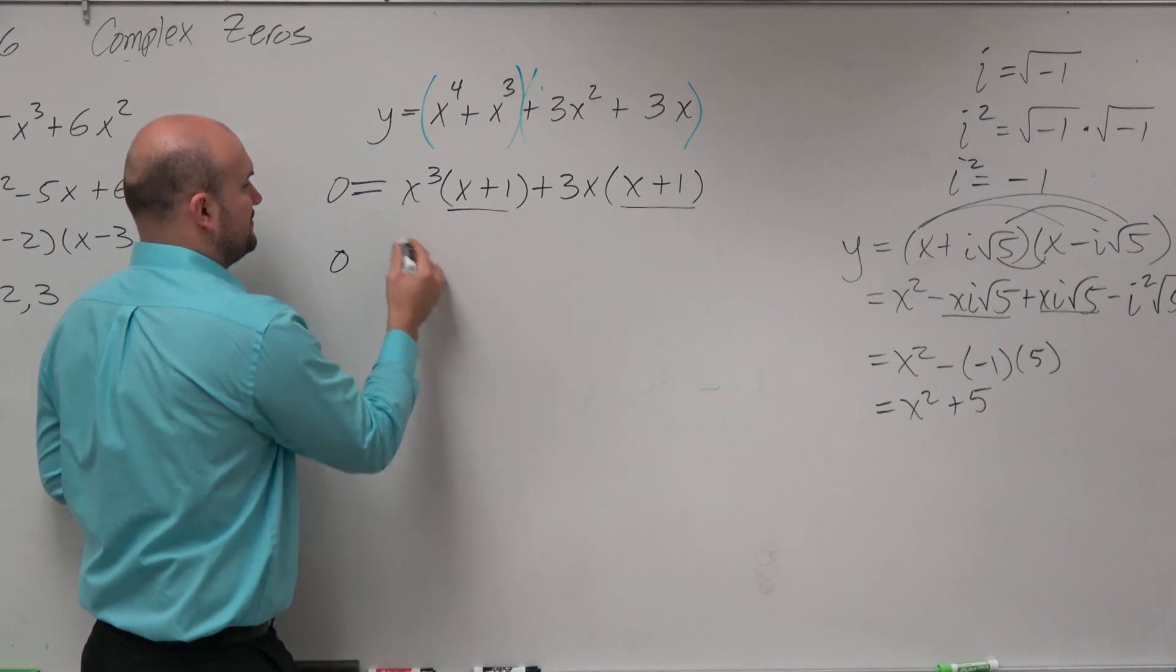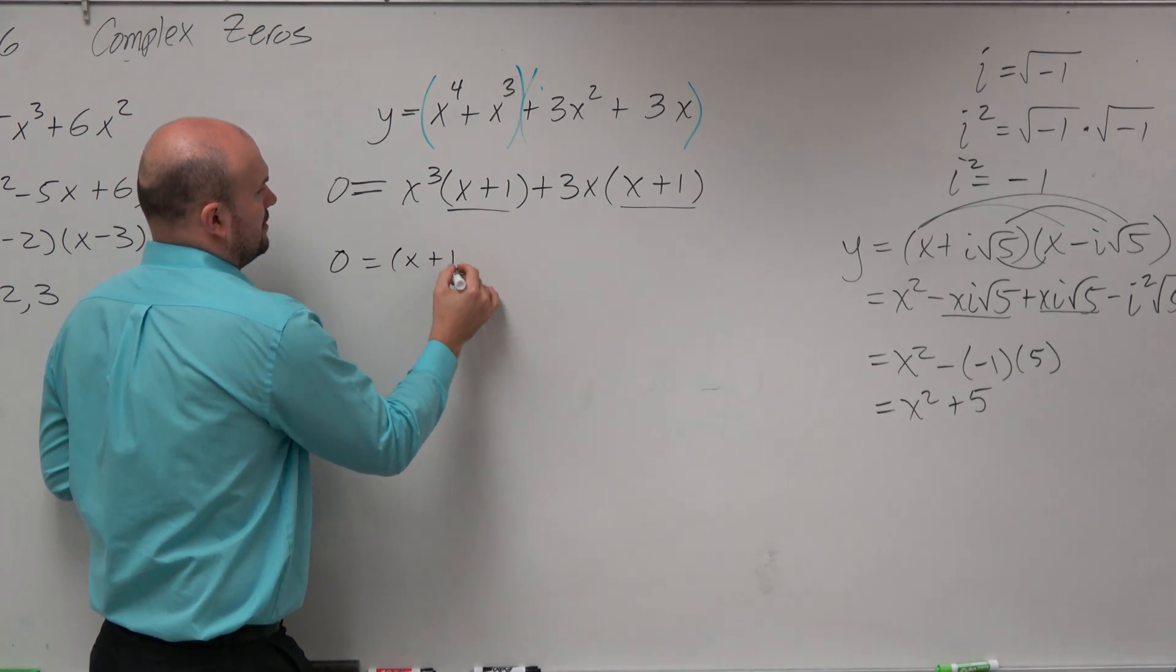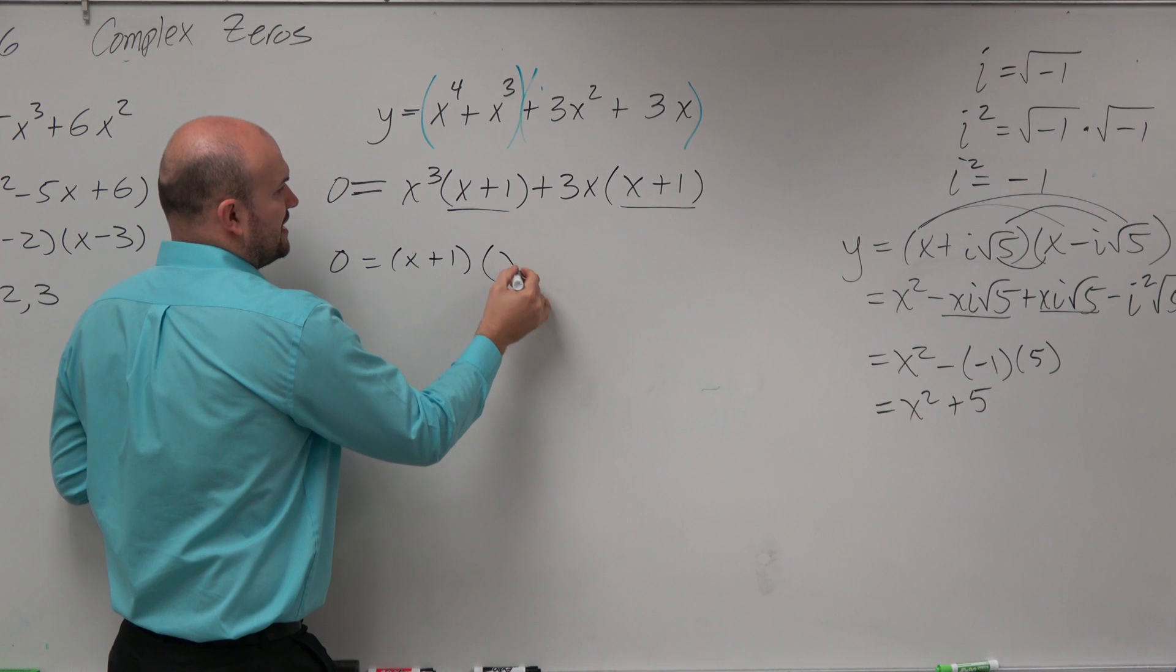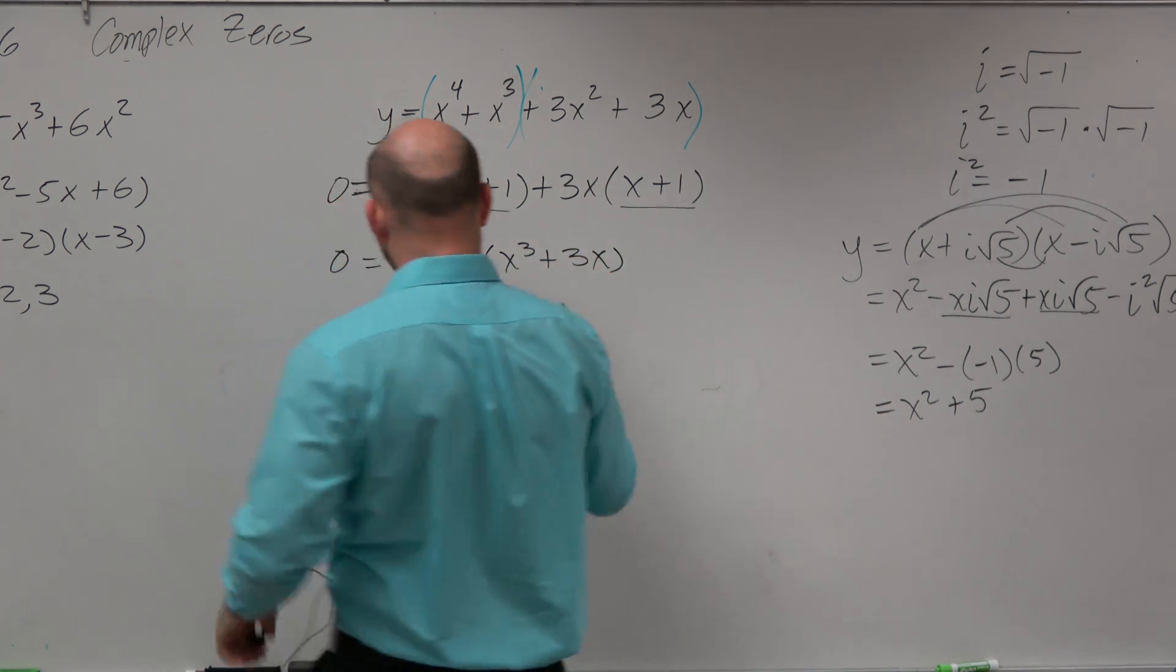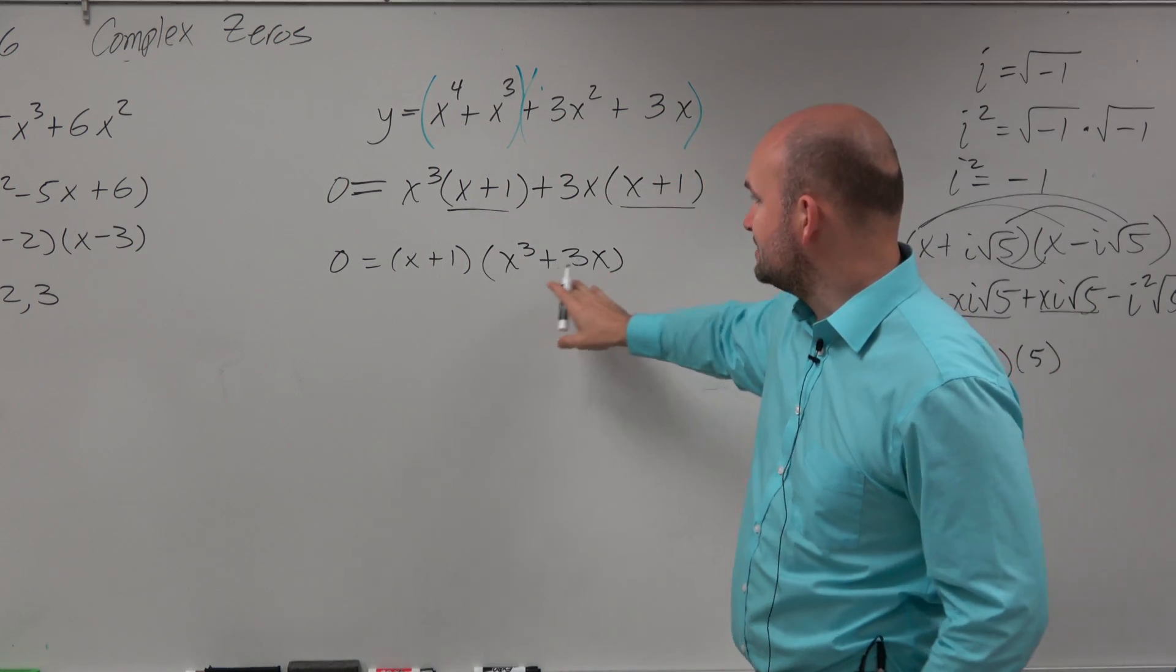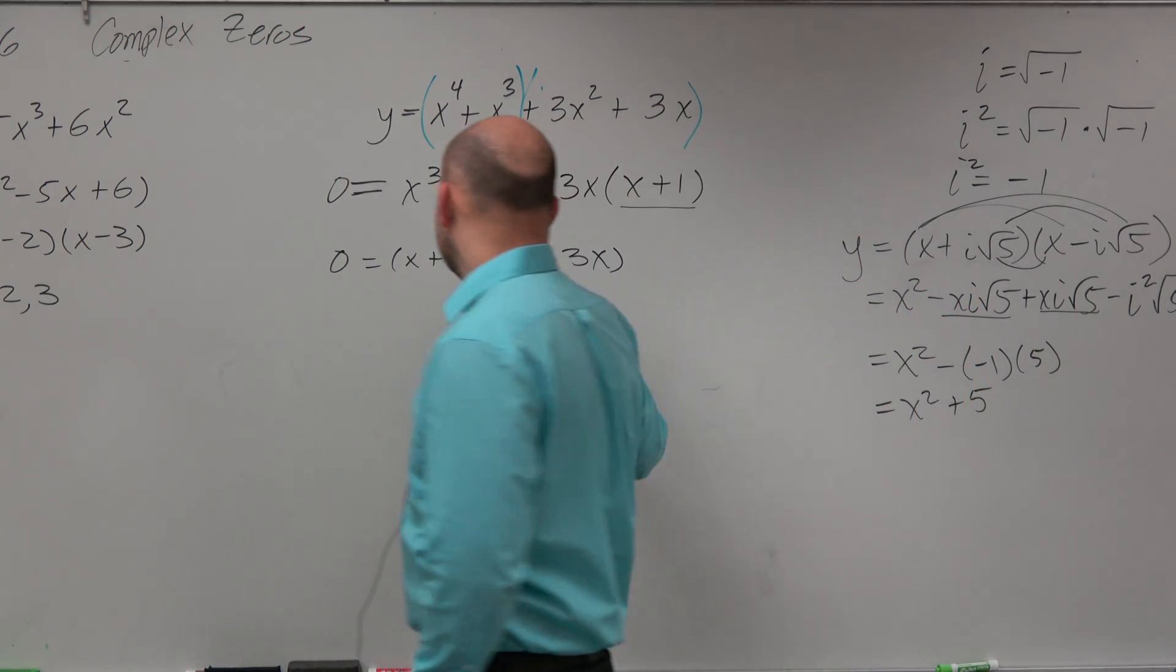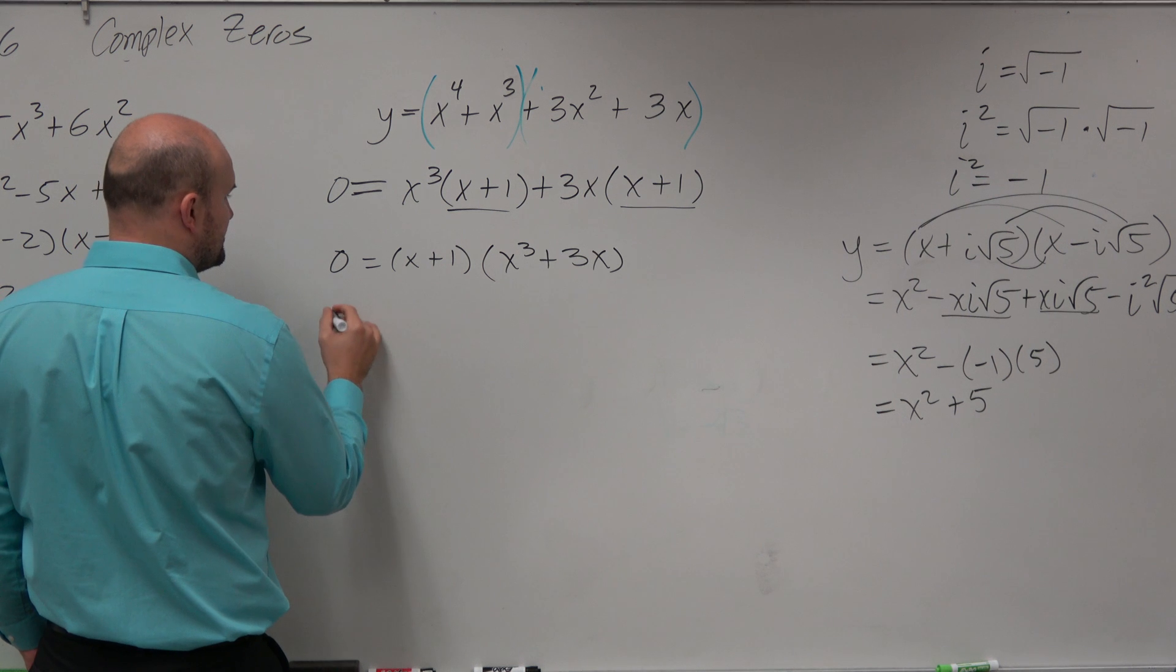So now I can factor out the x plus 1, and then I'm left with x cubed plus 3x. But again, to find the zeros, what I want to do in this case, you can set each one of these equal to 0.